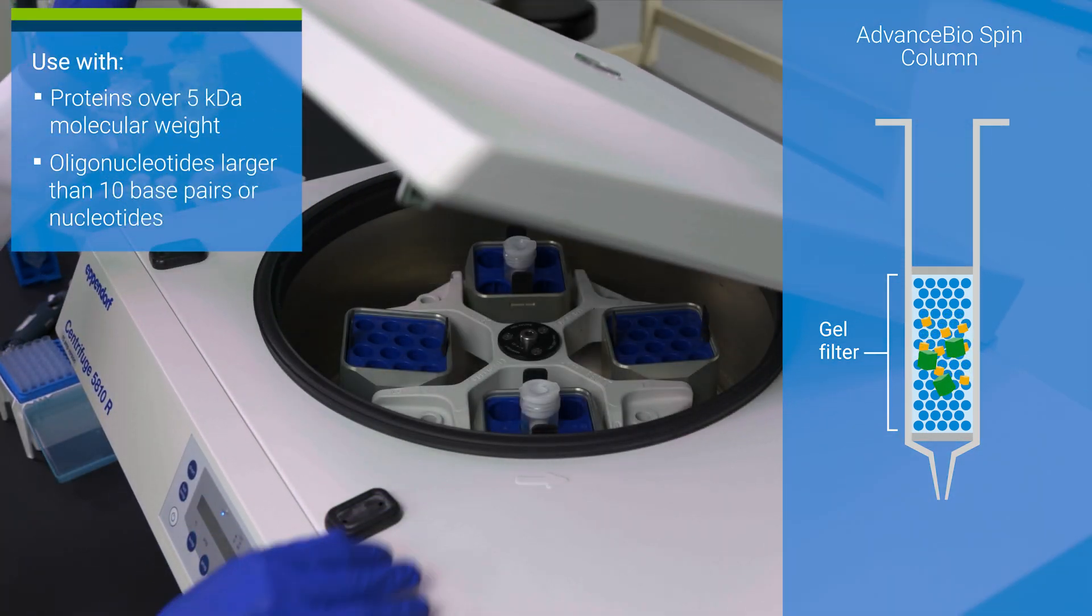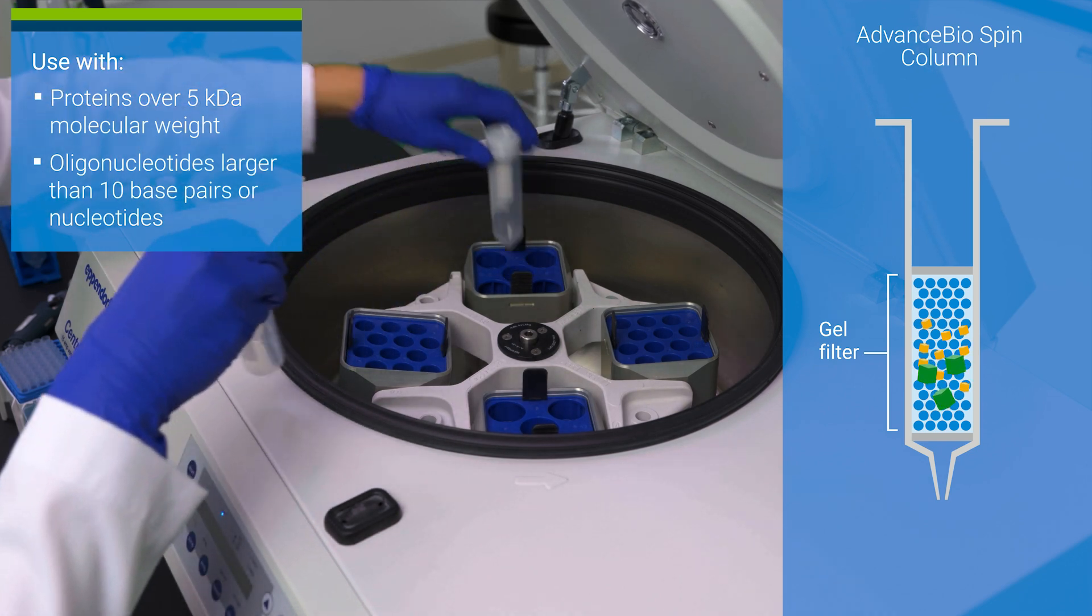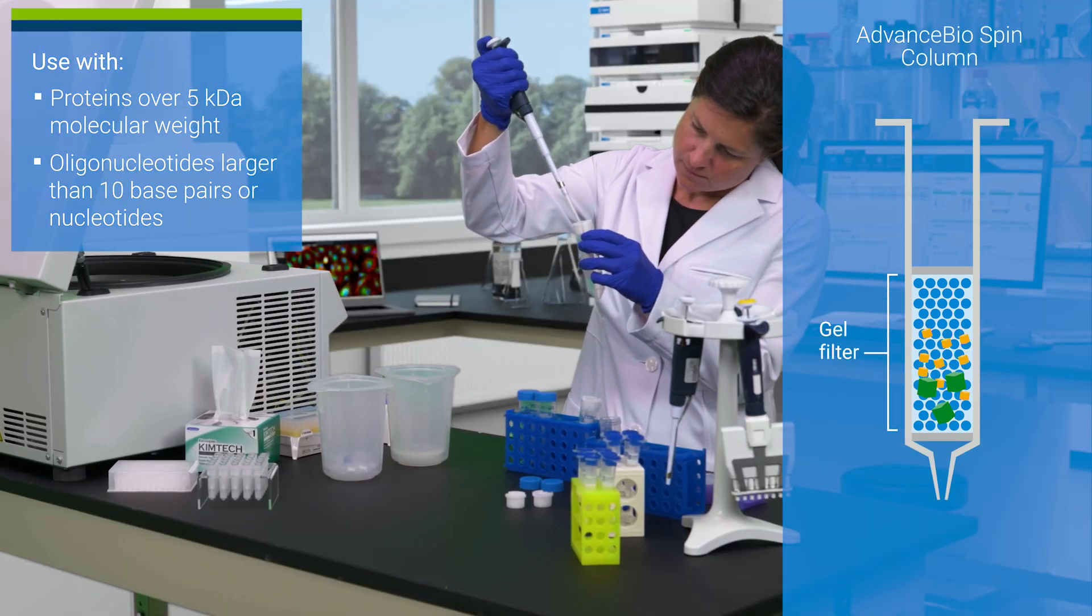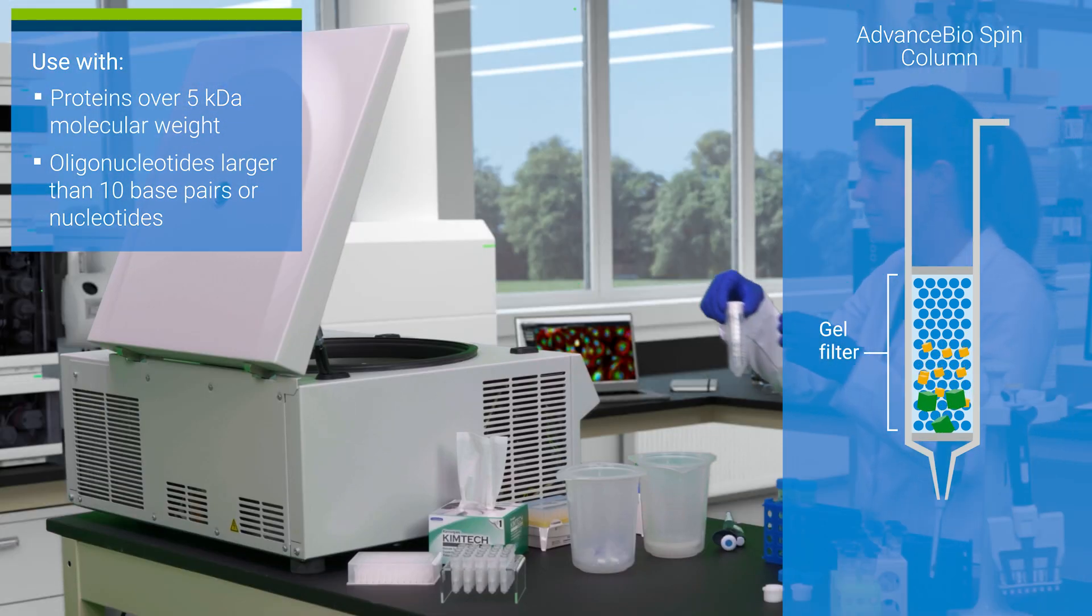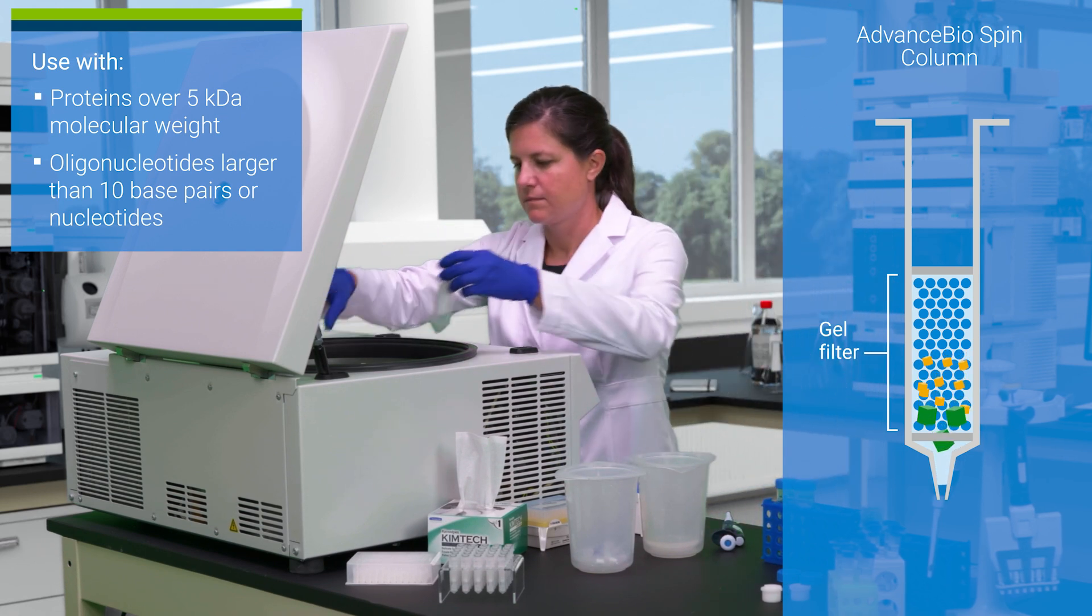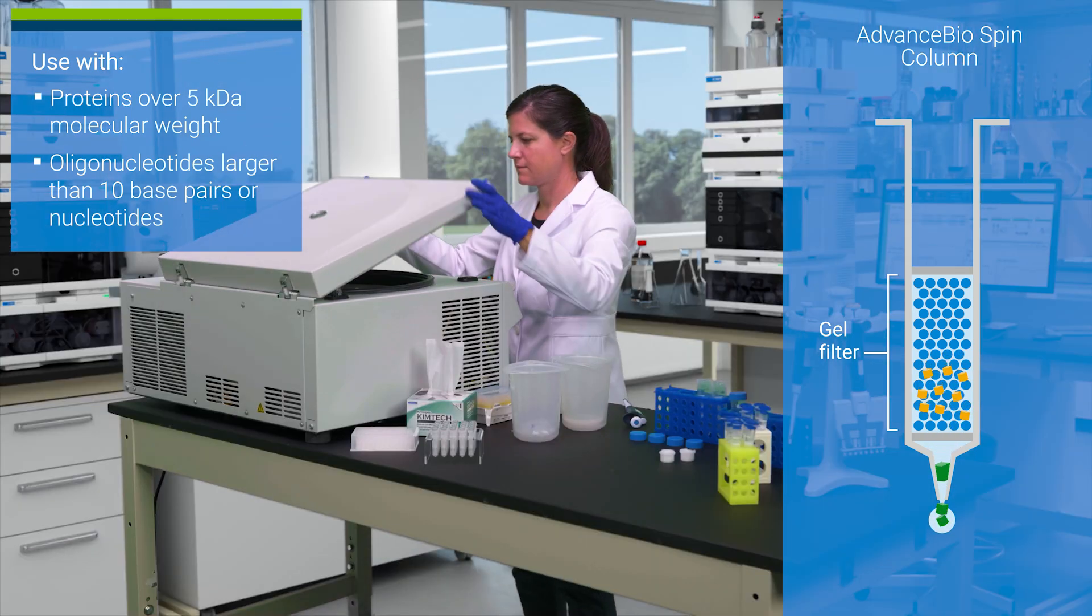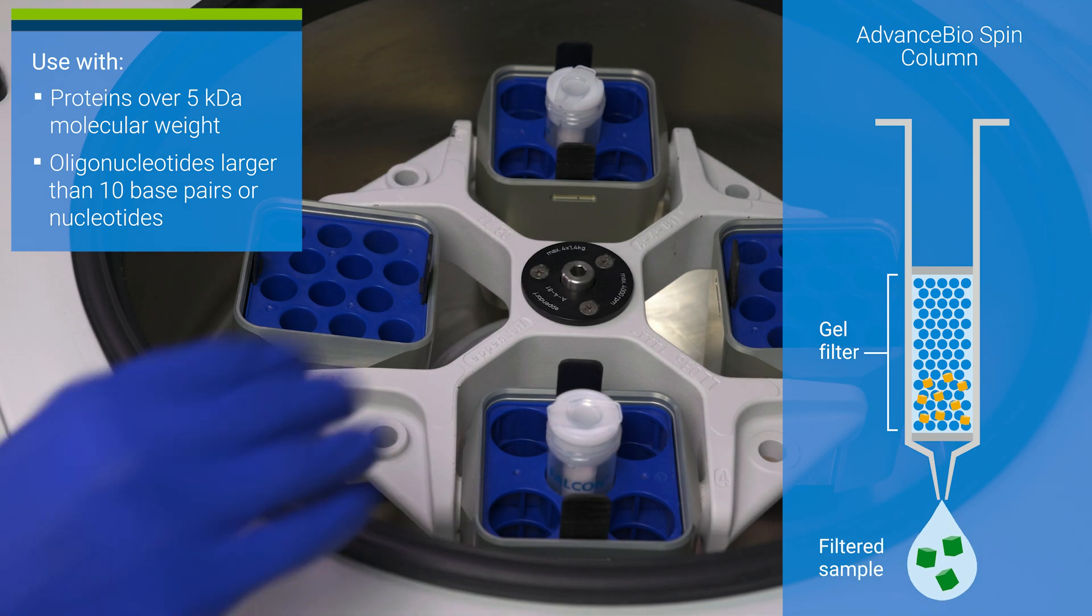Proteins larger than 5 kilodaltons, or oligonucleotides longer than 10 nucleotides or base pairs, are too large to effectively penetrate the pore structure of the particles and elute first as a single group.